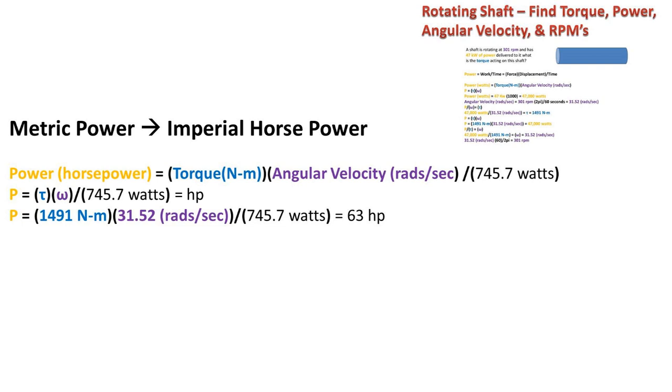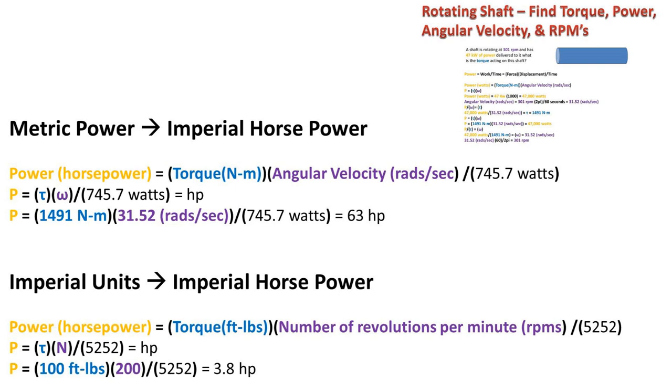So we are basically taking the power that we found in watts, then dividing by the conversion into horsepower of 745.7 watts. I have listed an example with numbers for your reference.